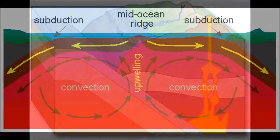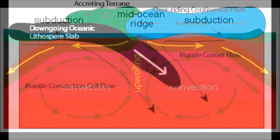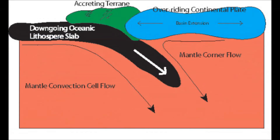The convection cycle of the mantle at a divergent plate boundary pushes the ocean floor towards the subduction zone and under the overriding plate. You can see how the terrain is scraped off onto the continental landmass.